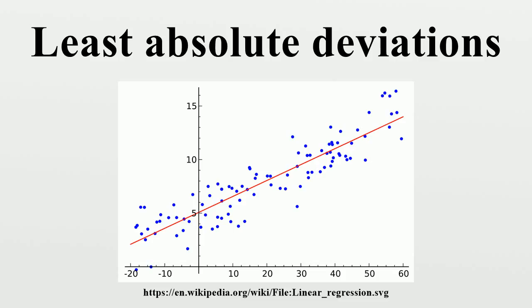To understand why there are multiple solutions in the case shown in figure A, consider the pink line in the green region. Its sum of absolute errors is some value S. If one were to tilt the line upward slightly, while still keeping it within the green region, the sum of errors would still be S. It would not change because the distance from each point to the line grows on one side of the line, while the distance to each point on the opposite side of the line diminishes by exactly the same amount.